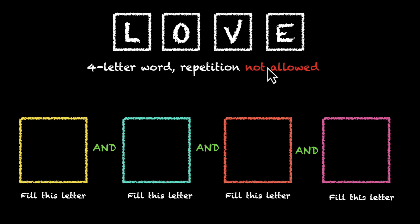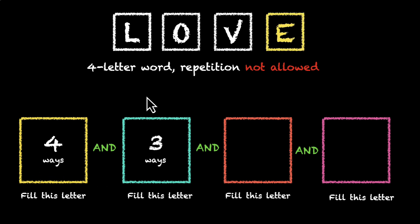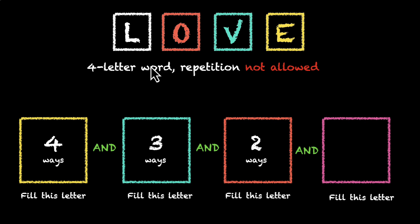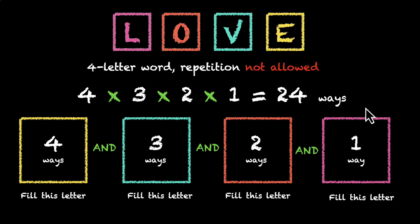We're making a four-letter word and repetition is not allowed. So for the first box, we have four options — it can be done in four ways. The next one can be done in three. We have three options left. The next one will have two, and for the last one we have only one letter left, so it will be done in one way. So four times three times two times one — that's 24. We can make 24 words by rearranging the letters of the word love. And by the way, one of them will be the word love itself.